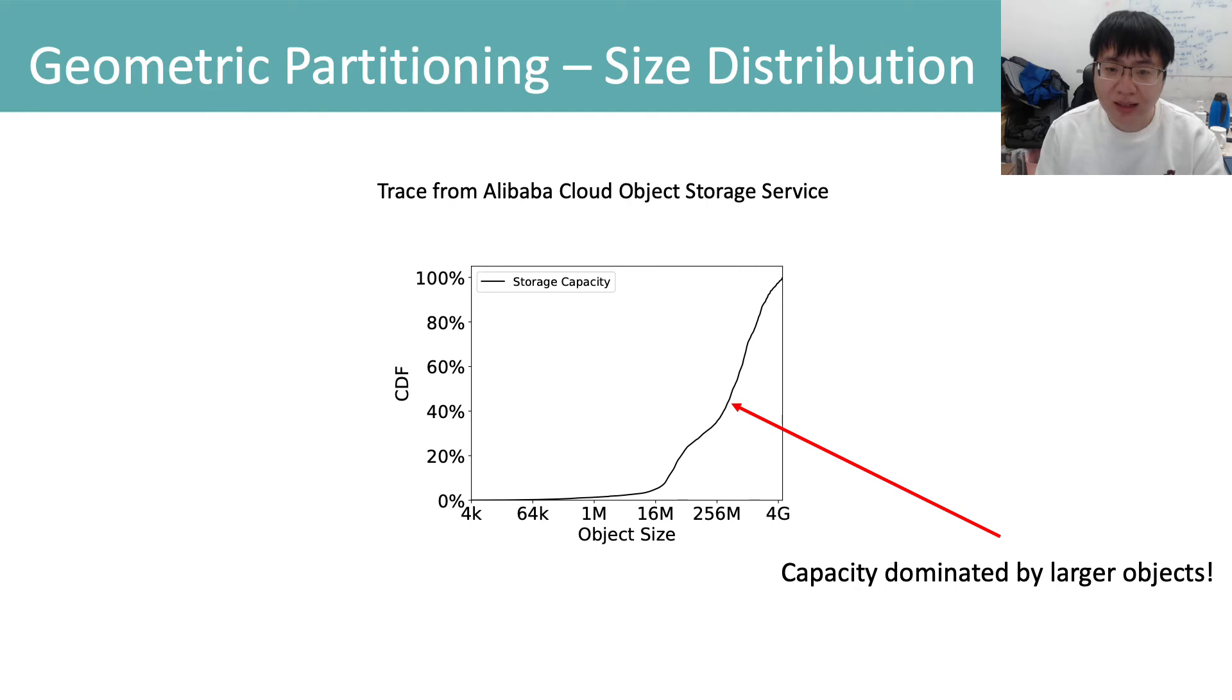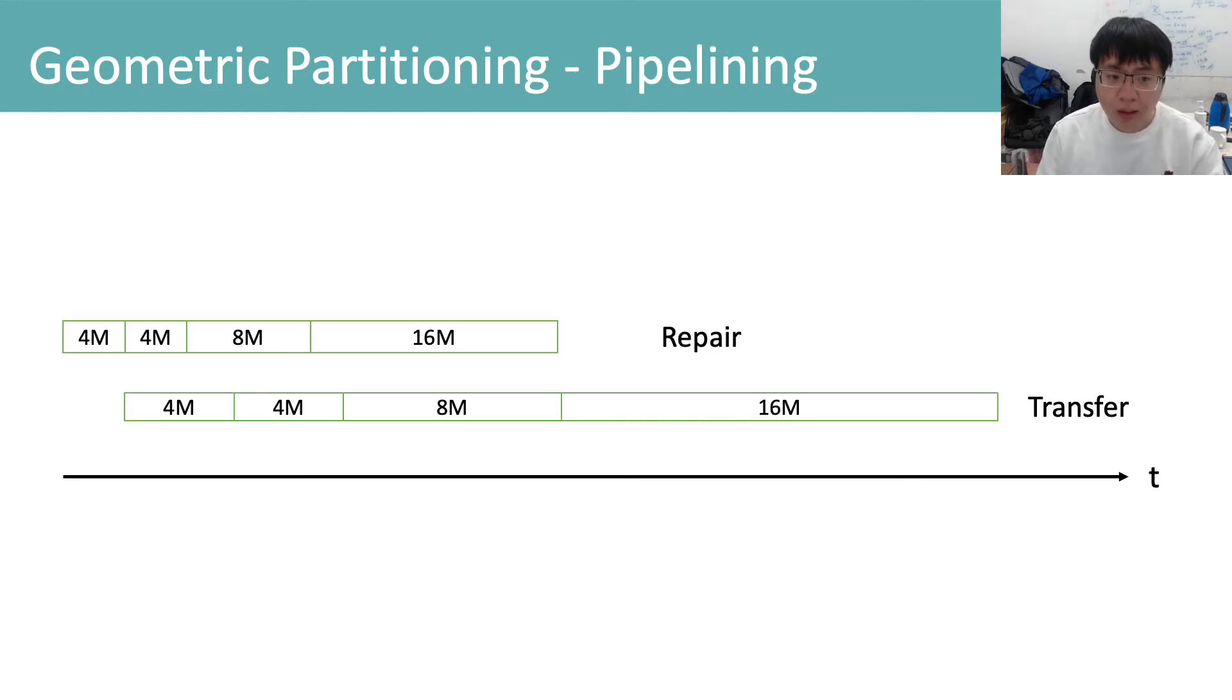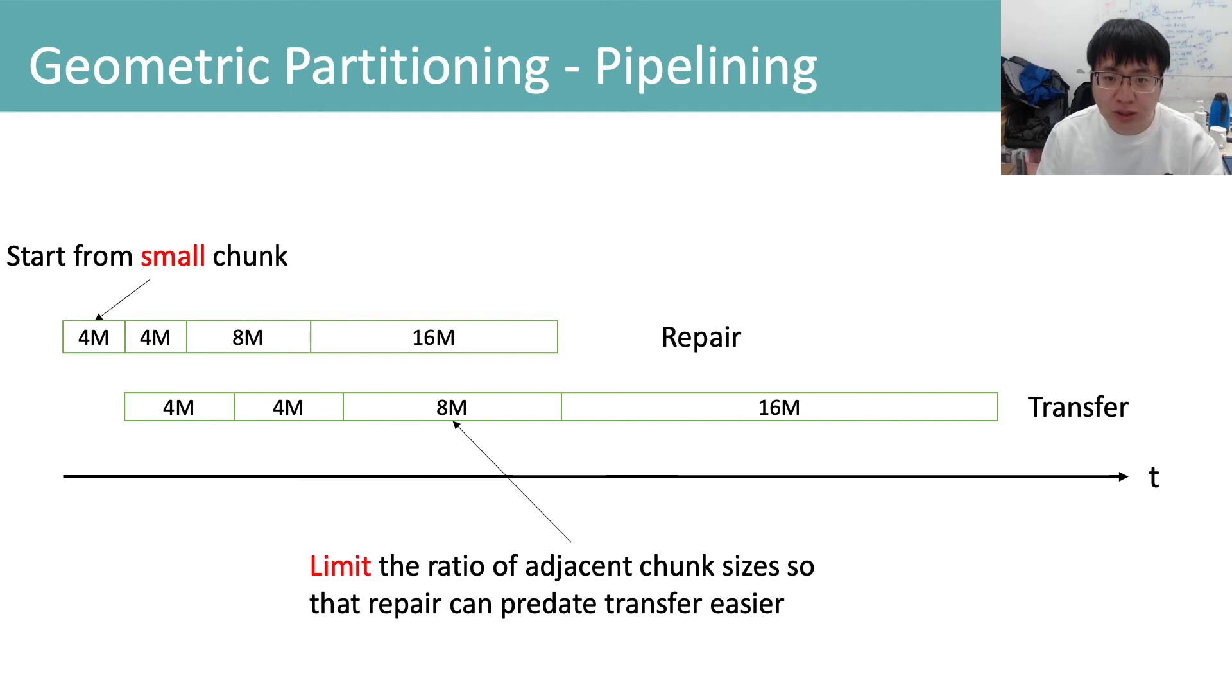Based on our investigation of the trace from Alibaba Cloud Object Storage Service, we find that storage capacity is dominated by larger objects. For degraded read, we start to repair from a small chunk size to avoid unnecessary waiting for the repairing of the first chunk. Then we limit the ratio of adjacent chunk sizes so that the repair of the current chunk can predate the transfer of the previous chunk.